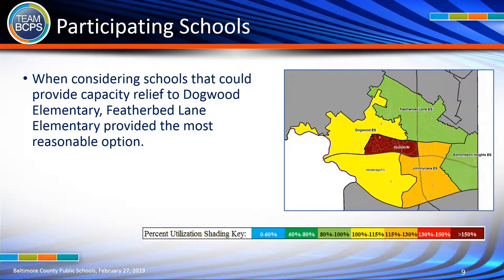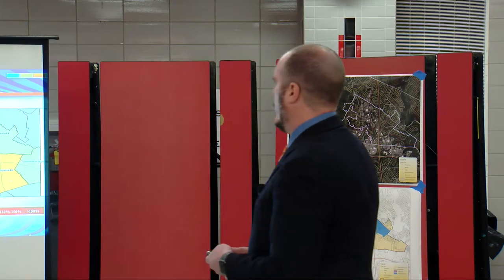You can see here a general area map of the schools in this region. Chadwick sits in the middle and is over 150% utilized — the additional construction there will help resolve their overcrowding. Schools in yellow are 100 to 115% utilized, which includes Dogwood. Schools in green are 80% to 100% utilized — that's Featherbed Lane. Between Dogwood and Featherbed Lane, there is an opportunity to help balance enrollment by moving some areas from one to the other to bring both schools as close to the green range as possible.